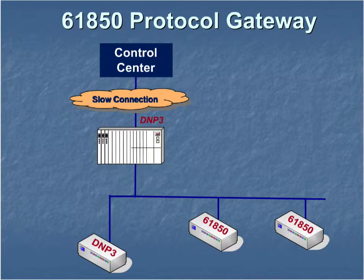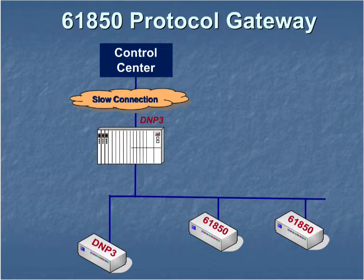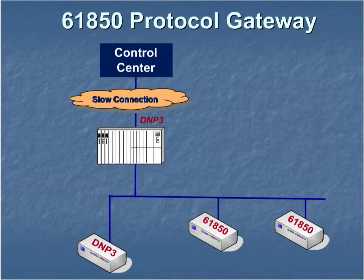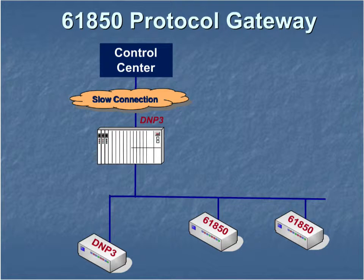This diagram shows a typical substation network architecture. At the bottom, we see DNP3 and IEC 61850 devices sharing the same Ethernet connection in the substation RTU. The substation RTU is connected to the control center via DNP3 through a slow connection.